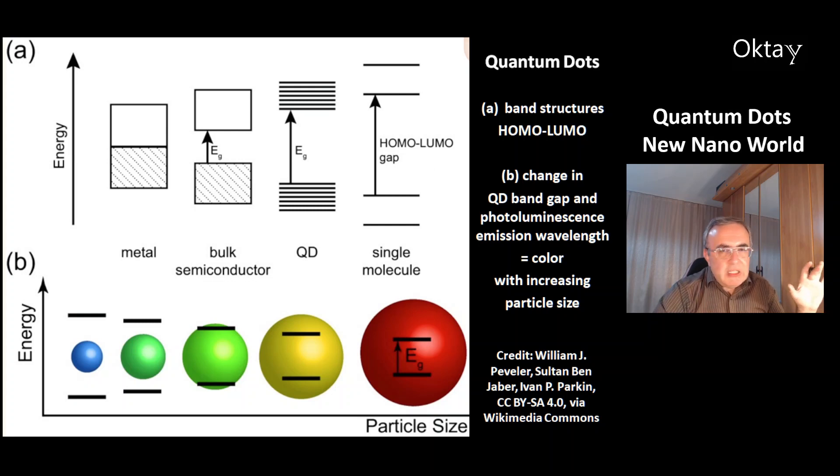At the bottom, that's the change in the quantum dots band gap and the photoluminescence emission wavelengths, which is a color with increasing particle size. The small particle has a big band gap. It's blue. And the big particle has a small band gap. That's why it's red. And the other colors are in between.